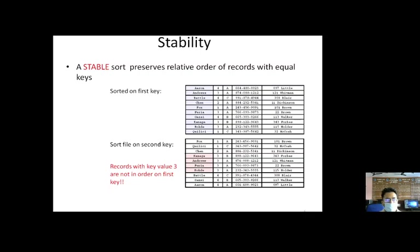In the second list we have taken a second value as a key — an integer value — and we have arranged these records in increasing order. Like 1, 1 — Fox and Policy have key value 1, Chen 2, then 3 and 4. Here records with key value 3 are not in order on the first key. So they are not arranged in alphabetical order between the names, meaning it is sorted on the second key but not on the first key.